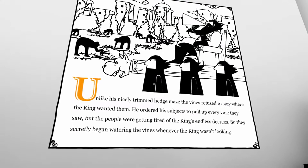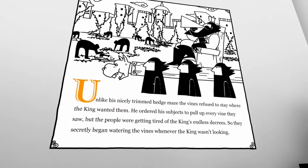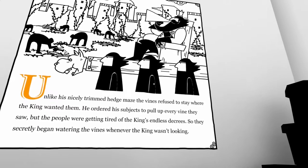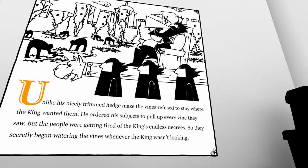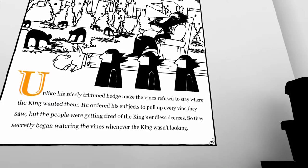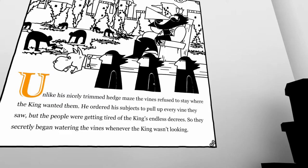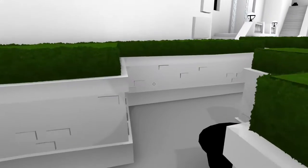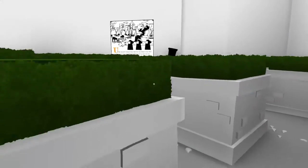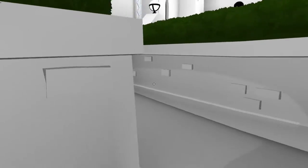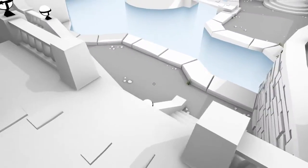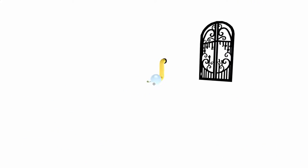Unlike his nicely trimmed hedge maze, the vines refused to stay where the king wanted them. He ordered his subjects to pull up every vine they saw. But the people were getting tired of the king's endless decrees, so they secretly began watering the vines whenever the king wasn't looking. That's what happens when you end up being a jerk.